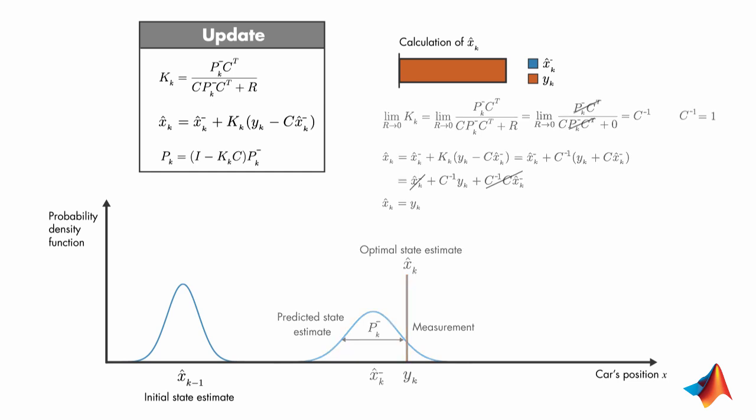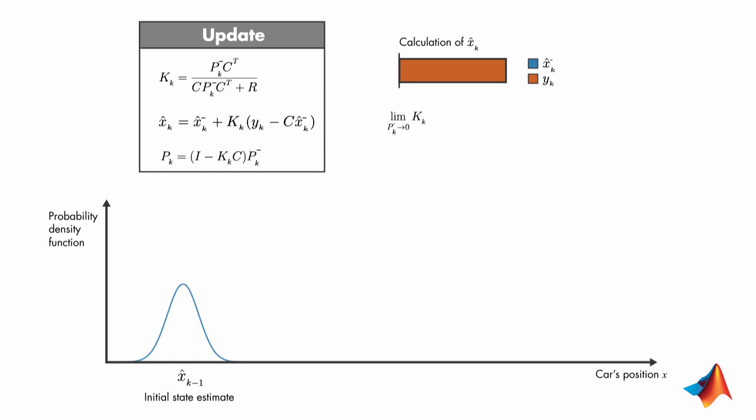On the other hand, if the a priori error covariance is close to 0, then the Kalman gain is found as 0. Therefore, the contribution of this term to x hat k is ignored, and the computation of x hat k comes from the a priori state estimate.